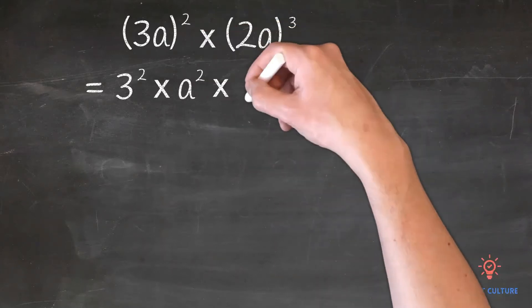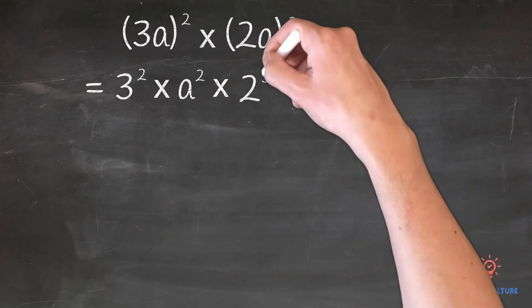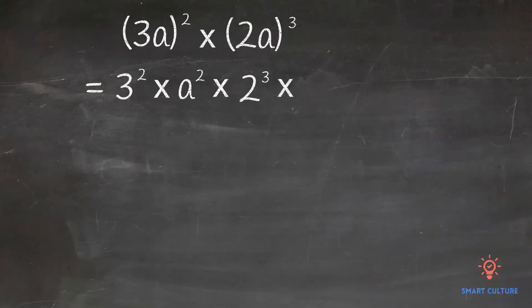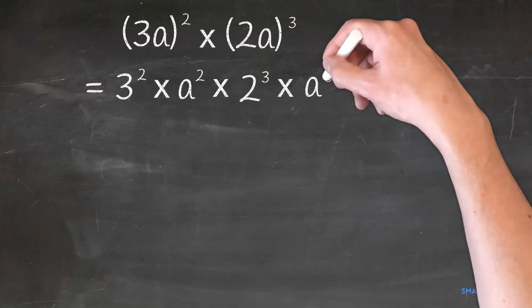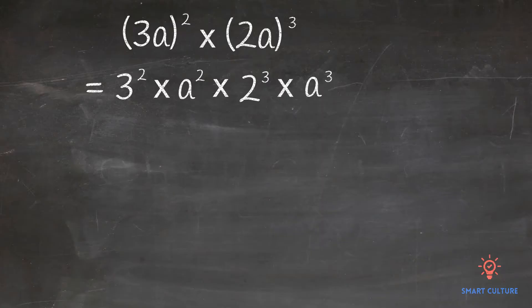This 2 has an exponent of 1. 1 times 3 equals 3. This a has an exponent of 1. 1 times 3 equals 3. So now we have 3 squared times a squared times 2 cubed times a cubed.